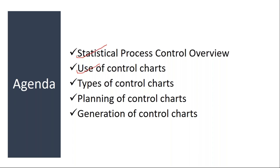Use of control charts — how to use them, we'll understand. Different types of control charts available in the system. Planning of control charts, how to do the planning. What master data setup is required for generating the control charts, we'll discuss. And finally, how to generate the control charts from the system — generation of control charts. These are the topics we will be covering in statistical process control.